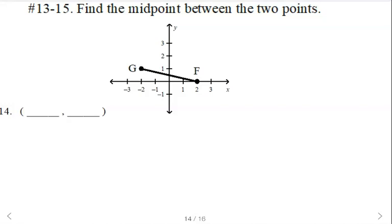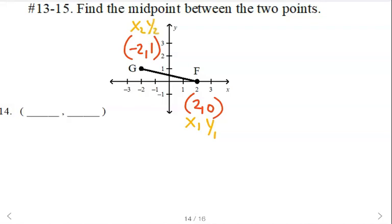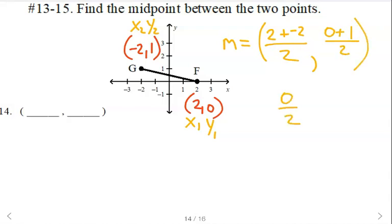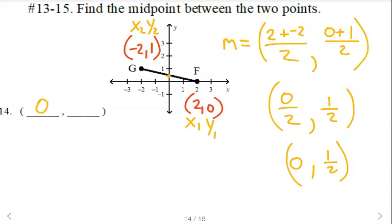This time we're not given the coordinates, but we can look at the graph. F is at (2, 0), G is at (negative 2, 1). Let one of those be your first point, the other be your second. It does not matter which is which — your work will look slightly different, but average your x's and average your y's. We'll have 2 plus negative 2 divided by 2, and 0 plus 1 divided by 2. That gives 0 divided by 2 and 1 divided by 2, so the midpoint is (0, 1/2). Looking at the grid, it makes sense for that to be the midpoint.